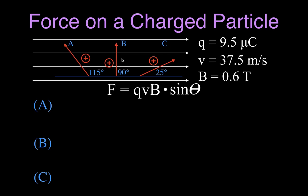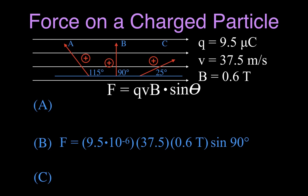Let's do B first, because that's our base example when it's moving perpendicular. We just take all those values — the charge, the velocity, the magnetic field strength — and multiply by the sine of 90. The sine of 90 is 1, and you get that the force on that particle in that magnetic field will be 2.14 times 10 to the minus 4 newtons.